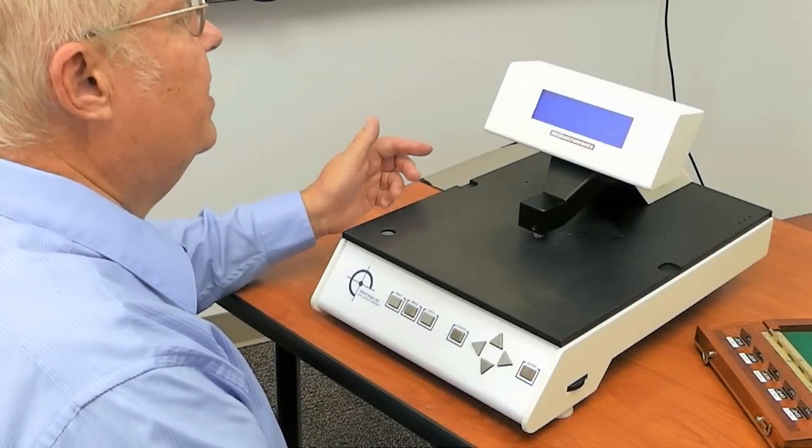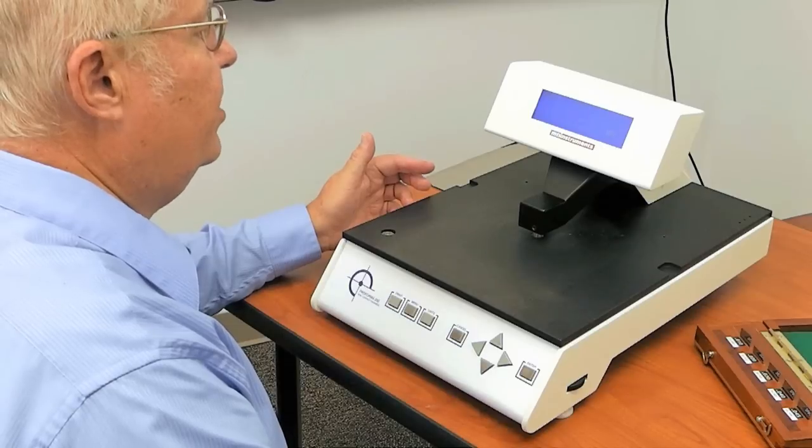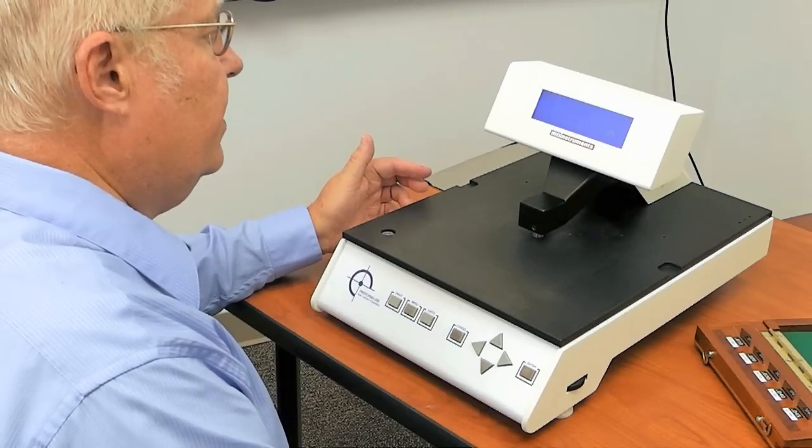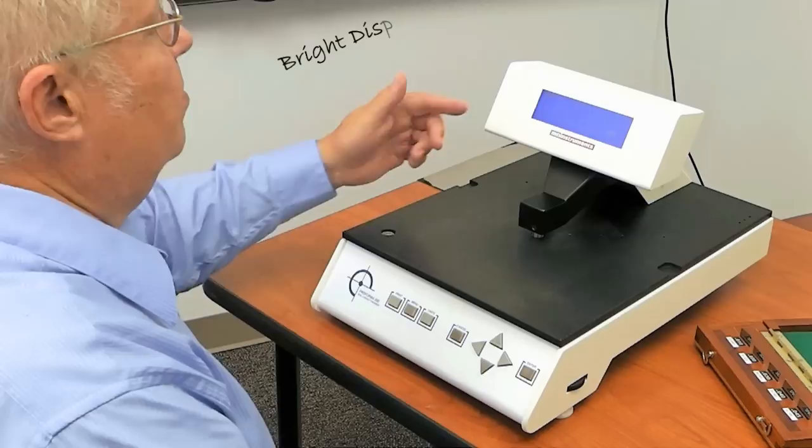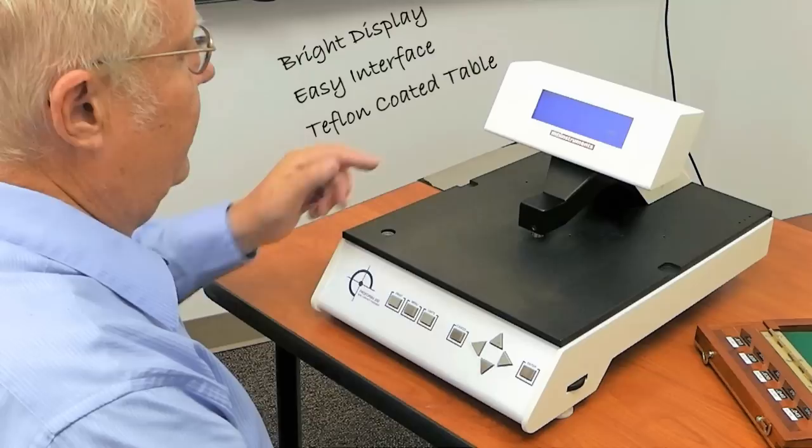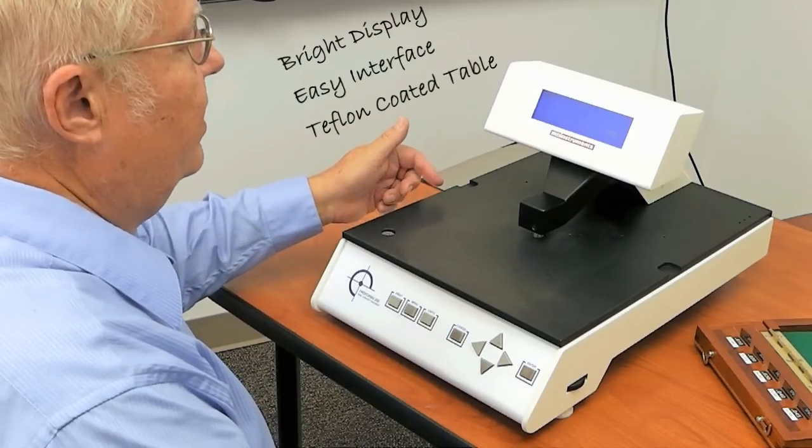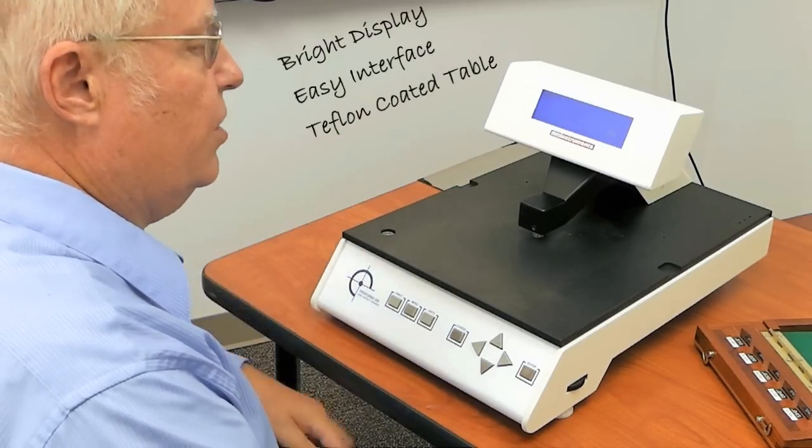The Proforma 300 is an excellent and easy-to-use non-contact thickness measurement gauge designed for measuring thickness of a wide variety of materials. It includes a bright display, an easy-to-use keyboard, and a Teflon coated table for easy removal and replacement of the wafers or samples being measured.